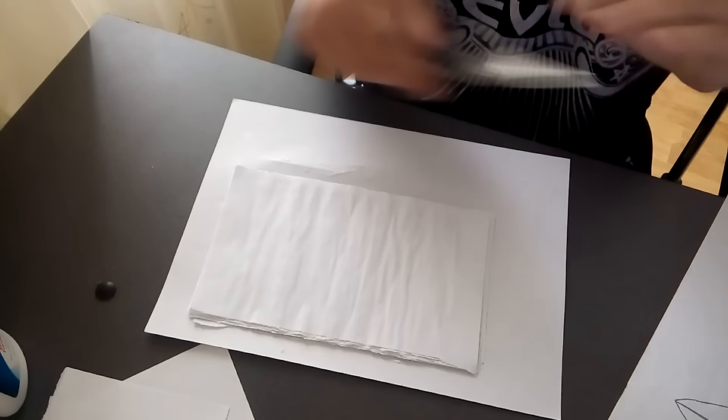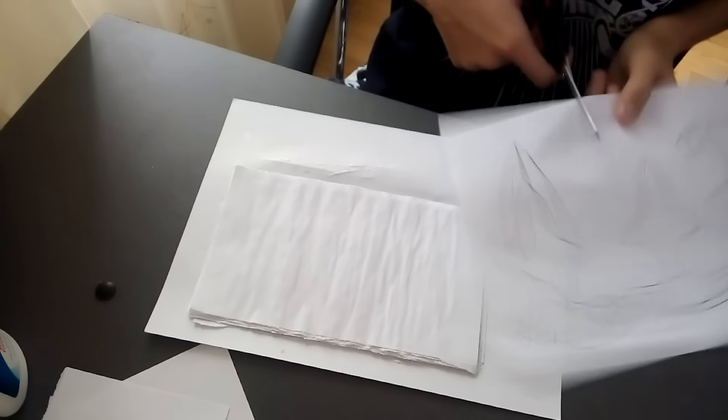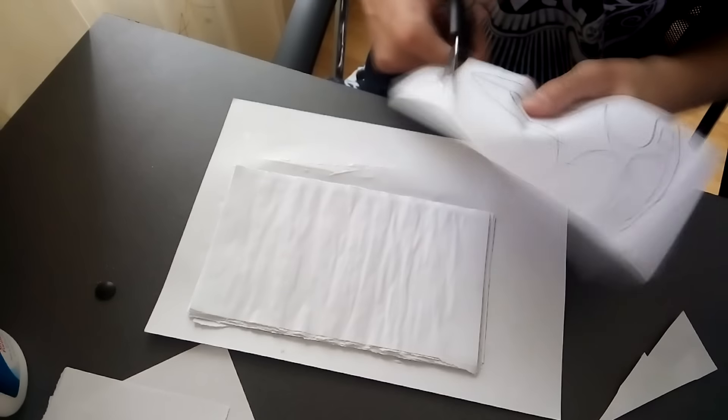Yeah so I glued only 15 sheets of paper because 20 were too much. Now what you have to do is take this away. There you go. This part. It has to be a rough shape. Don't cut. Don't do the final cut. There you go.